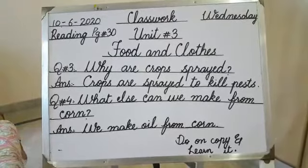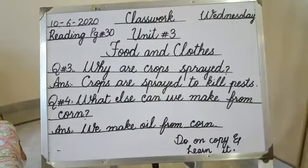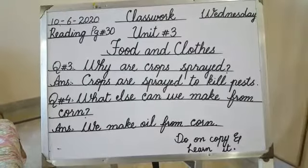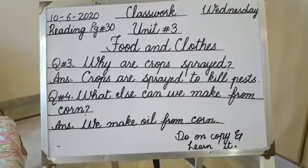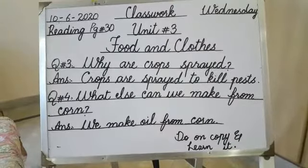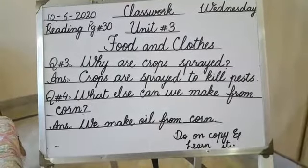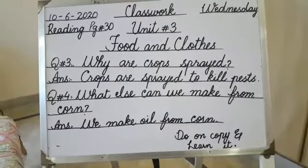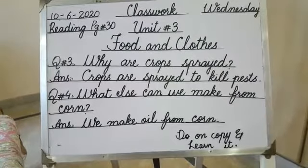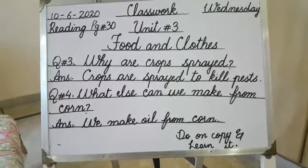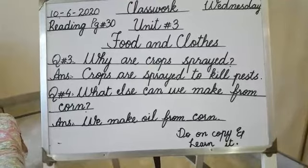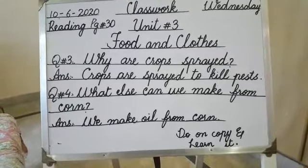Question number 4: What else can we make from corn? Answer: We make oil from corn. I will translate it in Urdu for your convenience. Why are crops spread? Crops are spread to kill pests.